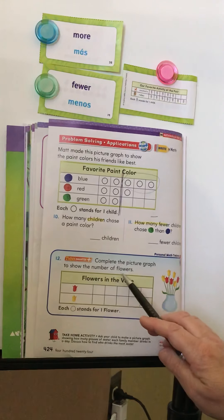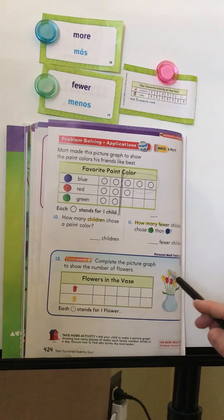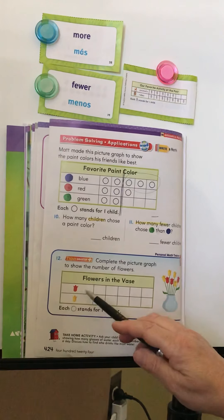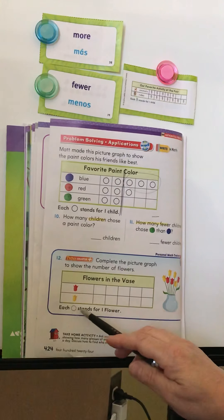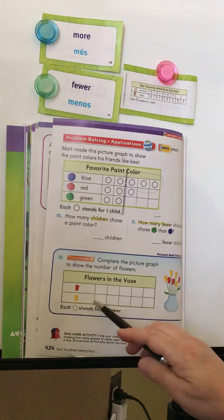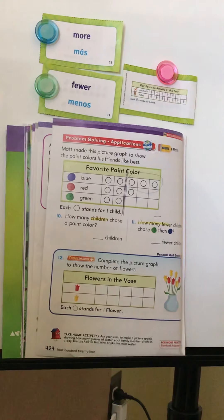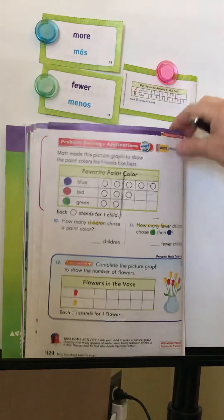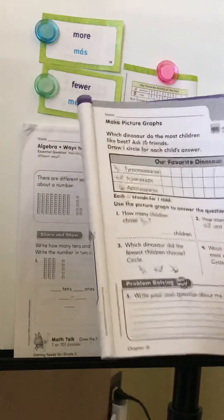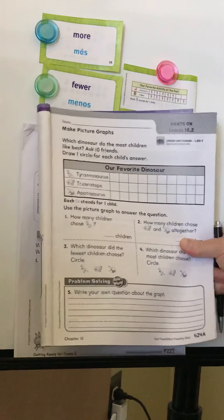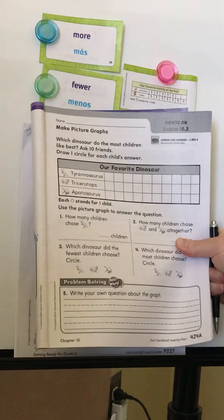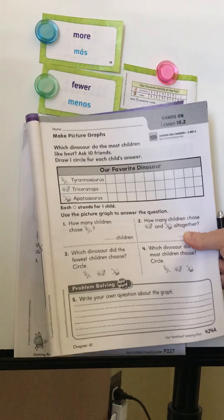Question twelve: complete the picture graph to show the number of flowers. Count how many red flowers and put a circle for each one, then count how many yellow flowers and put a circle for each. If you like graphing, you can go on to the bonus dinosaur graph on the white pages — that'll be fun too!